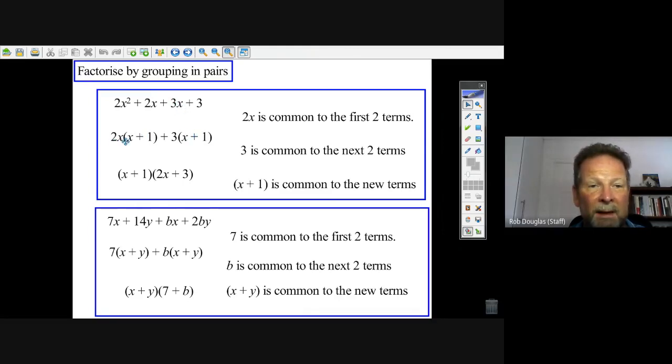Now if you look at these two terms here, I can see that x plus 1 is common. It's in both, so I write it down once: x plus 1. And I write the other parts, the 2x and the 3, down here and it works perfectly. X plus 1 times 2x gives me this part. X plus 1 times 3 gives me this part. We say x plus 1 is the common factor to these two new terms.